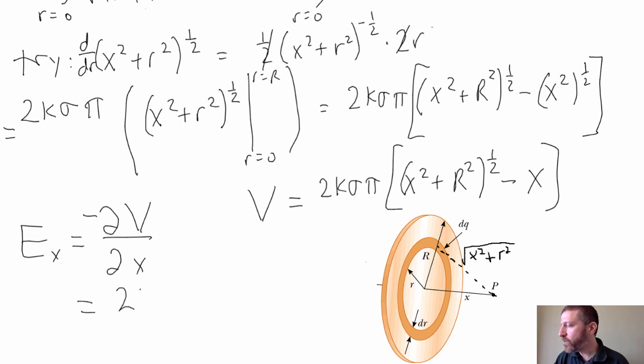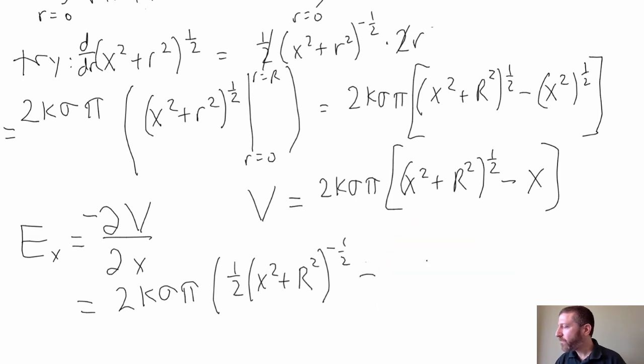This is just a constant, 2K sigma pi. And then with respect to X, a partial derivative, we do have an X there. So that'll be one half times X squared plus R squared, R is a constant here, to the negative one half minus the derivative of that is just one. Whoops, I gotta do my correction factor right there. That'll be times 2X. And then I do minus 1 right there.